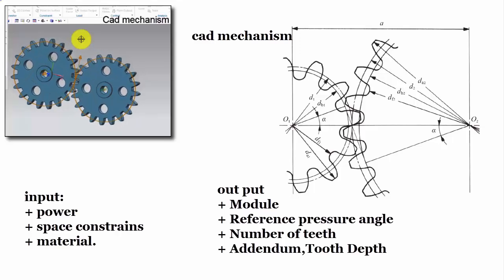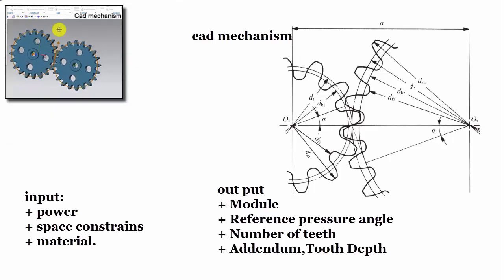The teeth run parallel to the gear axis and can only transfer motion between parallel axis gear sets. The calculations for spur gears are also simple and they are used as the basis for the calculations for other types of gears.